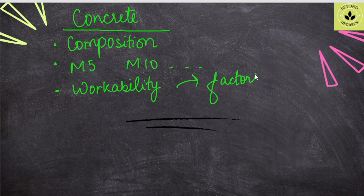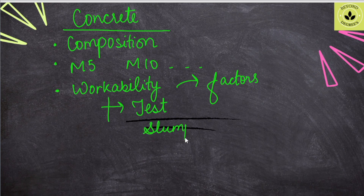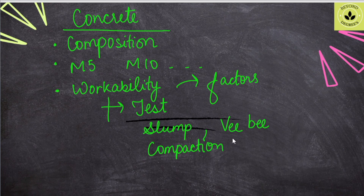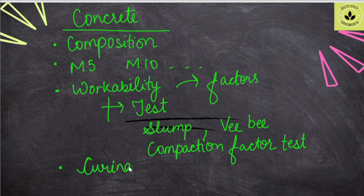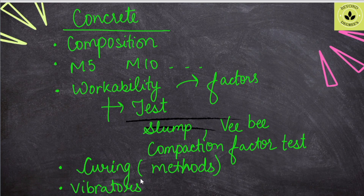Which factors affect workability — we ask the tests: the slump test. We also take the compaction factor test. The compaction factor value of 0.78 is given — which degree of workability does this represent? Water-cement ratio also affects concrete, and then the method of curing — we ask the importance of curing, advantages, why it is important, and what methods are used. Different types of vibrators used in concrete are also asked.